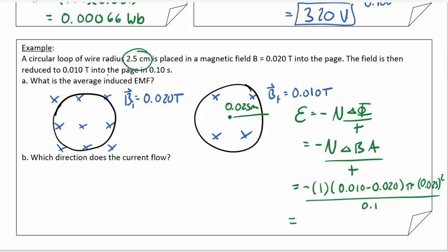And this final answer ends up being right around 2.0 times 10 to the negative 4 volts. You can see not very much because a single loop on its own is not going to generate much voltage.